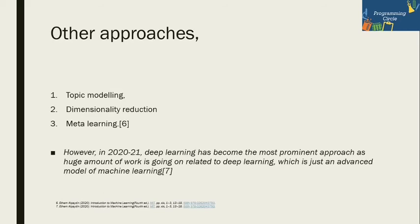Other approaches can be considered subsets of the three existing techniques. Topic learning is one — it is essentially unsupervised learning. Given a particular topic, it will segregate or summarize documents, and it is used for social network insights. Dimensionality reduction is another approach: when you have high-dimensional data, you reduce the dimension using methodologies like Principal Component Analysis. Finally, we have meta learning, which we will cover later.